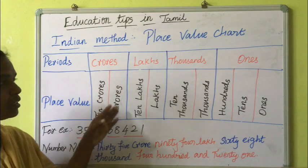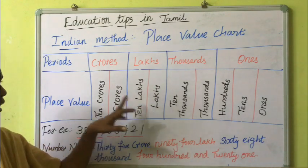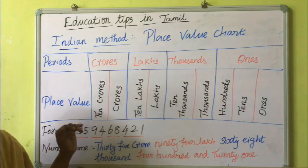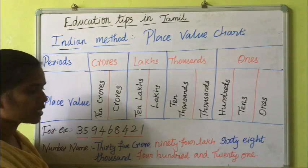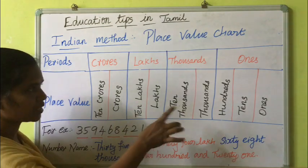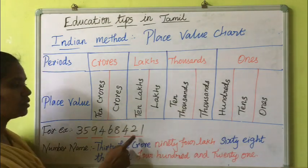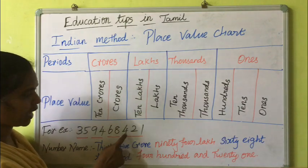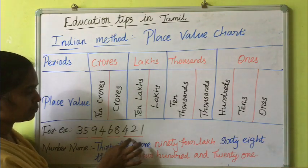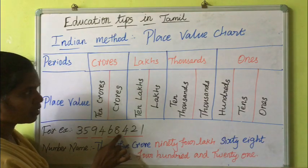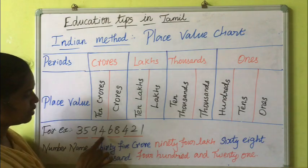First, you divide into the ones spot, thousands spot, lakhs spot, and crores spot. Under the ones term: ones, tens, hundreds. Next, thousands and ten thousands.